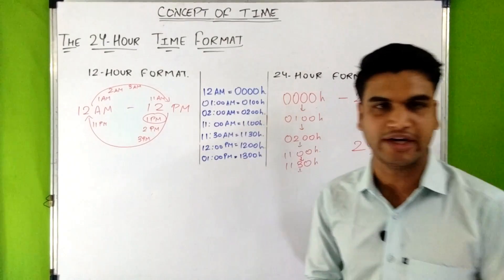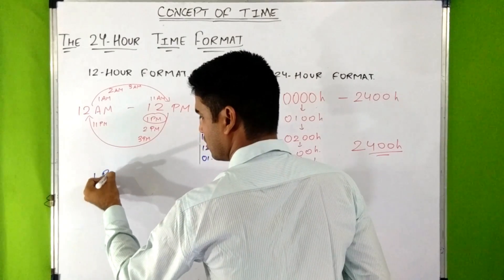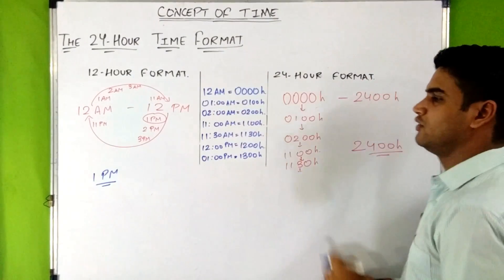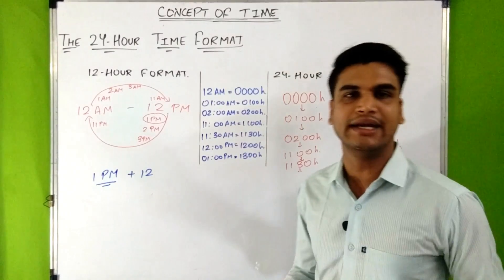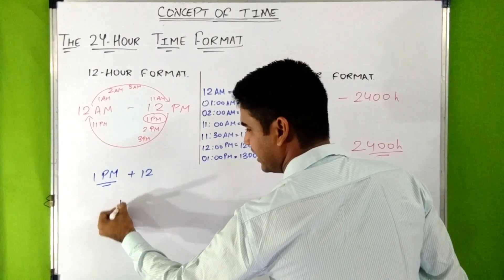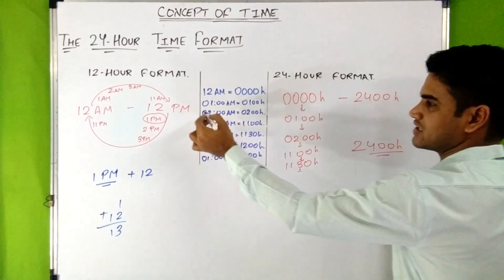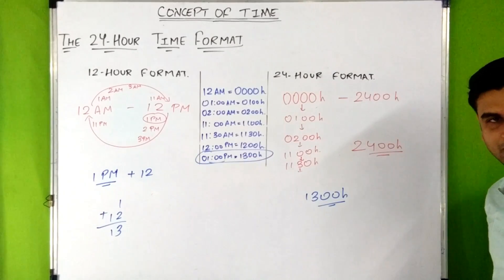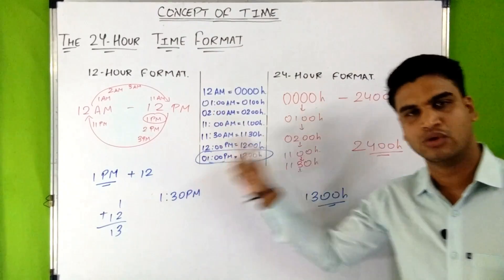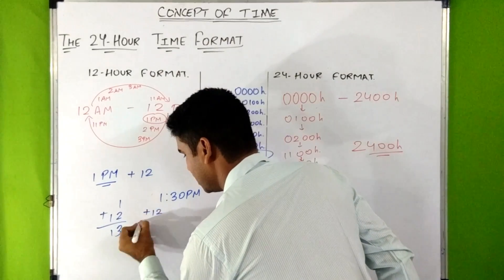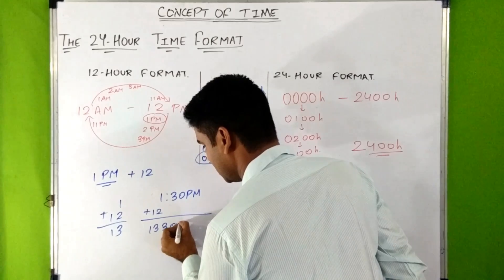Now let's see how to convert from 12-hour format to 24-hour format. For example, if it is 1 PM in 12-hour format, you simply add 12 to the number of hours: 1 + 12 = 13, so it becomes 1300 hours. If it is 1:30 PM, you add 12 to the hours only, giving 1330 hours in 24-hour format.